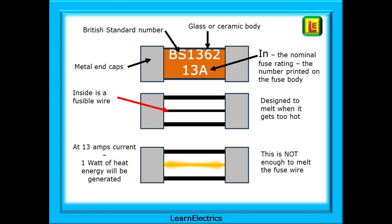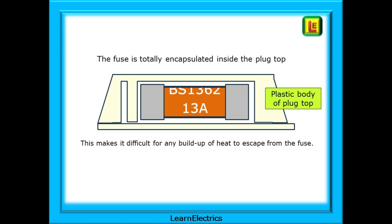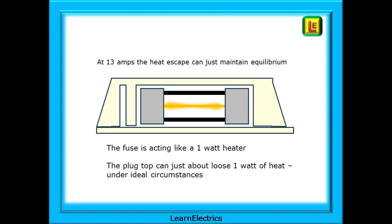At 13 amps of current, about 1 watt of heat energy is produced inside the fuse, and this is not enough to melt the fuse wire, and so a 13 amp fuse will allow 13 amps of current to flow. Remember that the fuse will be totally enclosed inside the plug-top, and that this will make it difficult for any build-up of heat, any excess, to escape from the fuse and plug-top. At 13 amps, the amount of heat escaping is just enough to maintain equilibrium.